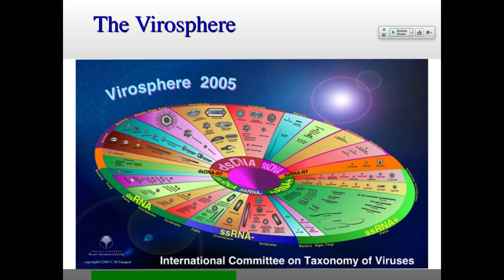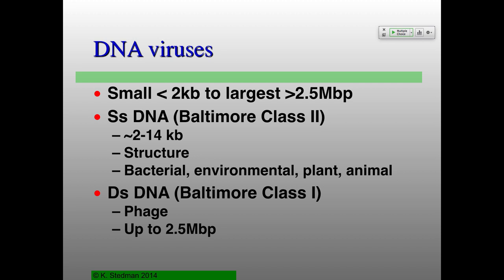If you think about viruses packaging DNA, single-stranded DNA viruses have some of the smallest genomes — some are less than 2,000 bases in length. On the other hand, double-stranded DNA viruses can be huge — above 4 megabase pairs for the largest ones. When Nacho showed you the Pandora virus, these are virions you can actually see in the light microscope rather than needing an electron microscope — they have really big genomes, some larger than some bacterial genomes.